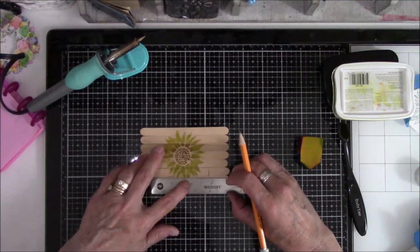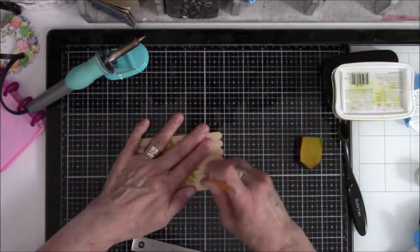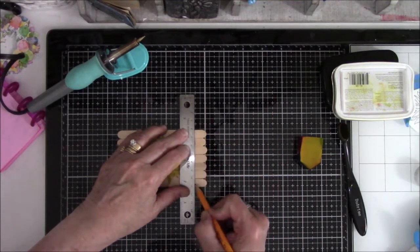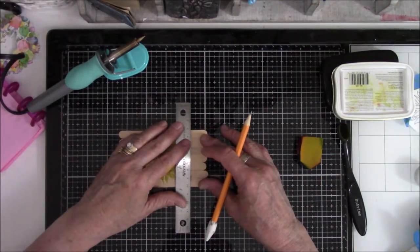Now I've got to cut off the ends of the popsicle sticks to make sure it's only three and a half inches tall. I'm marking it with the pencil.